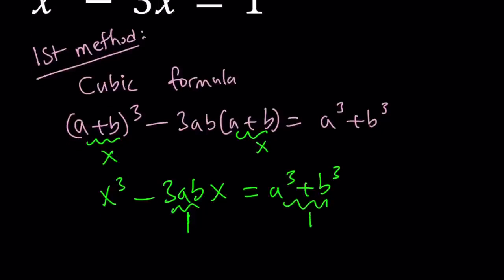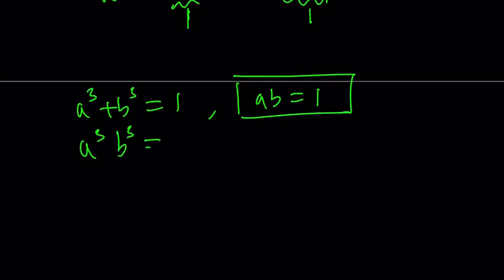So we get a very basic system from here. Let's go ahead and write it down: a³ + b³ = 1, and ab = 1. Let's go ahead and cube both sides here. That gives us a³b³ = 1.